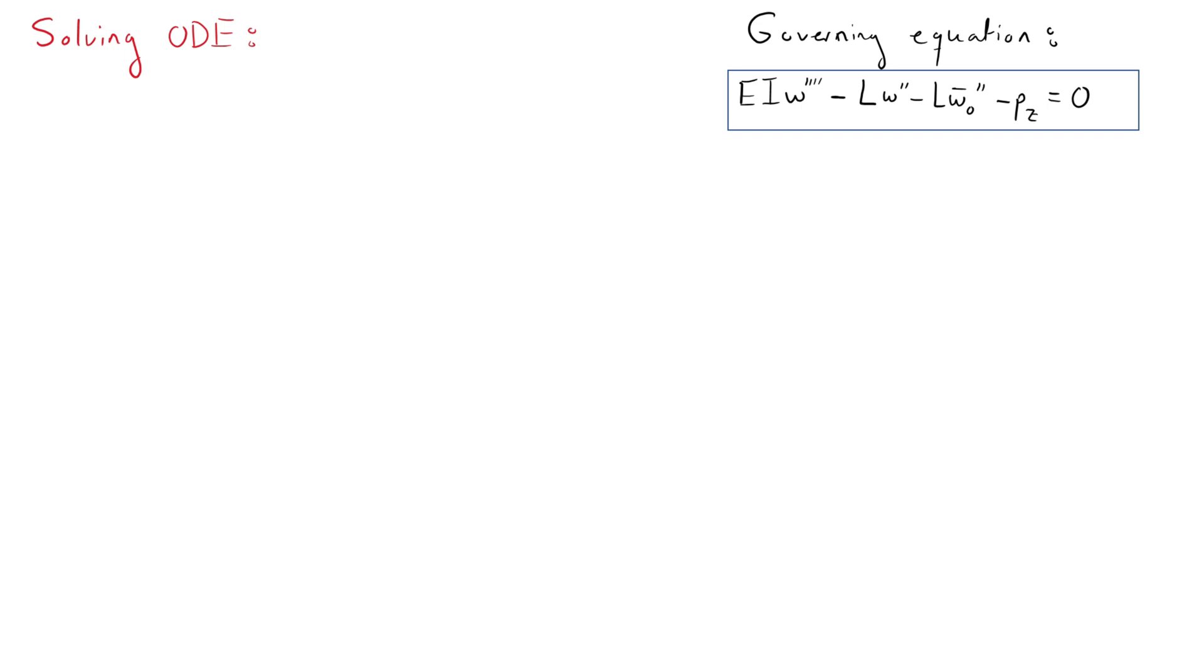Now let's ignore initial deformations and look at the solution for the governing differential equation. We can see that this is a fourth order, linear, non-homogeneous, ordinary differential equation. Because the sign of L can change, there are two solutions for this equation.